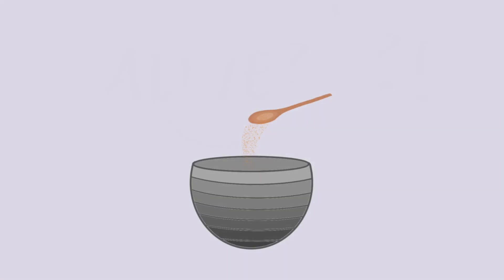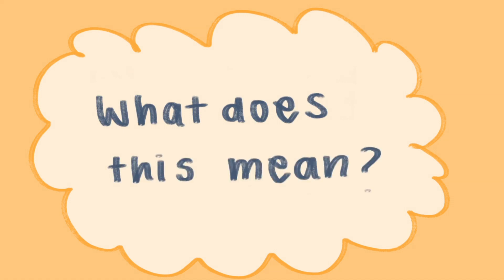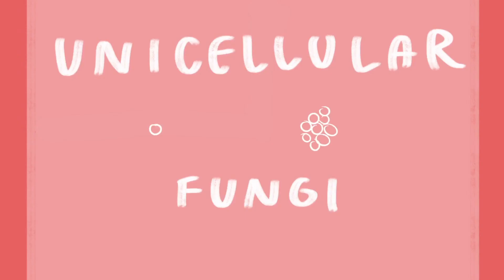When you poured the yeast into your pizza dough, you probably didn't give it a second thought, but did you know that what you put in there is actually alive? These are yeast, which are unicellular fungi, invisible to the naked eye. Unicellular means one-celled, as opposed to having more than one cell. Fungi is the biological kingdom that yeast belong to, along with mushrooms and mold.